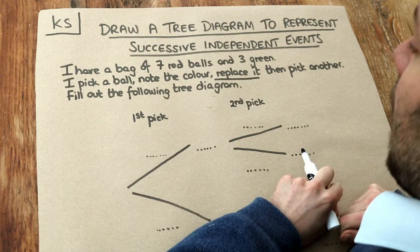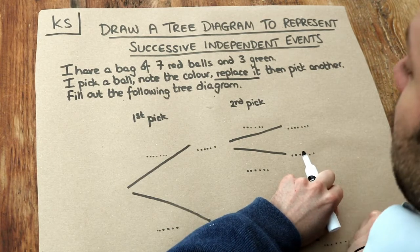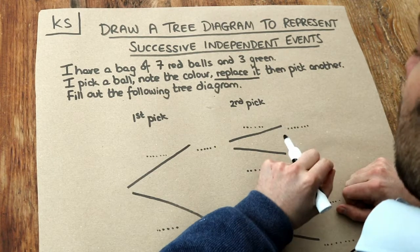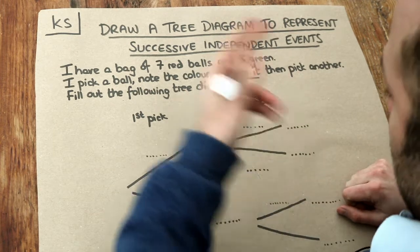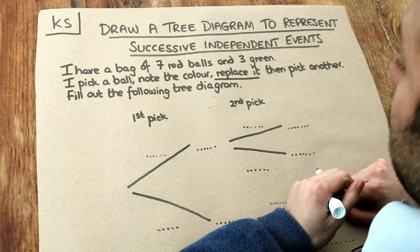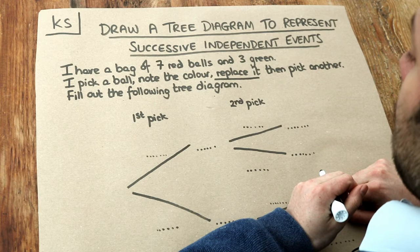I have a bag of seven red balls and three green. I pick a ball, note the colour, replace it — so I put it back — and then pick another. Fill out the following tree diagram.